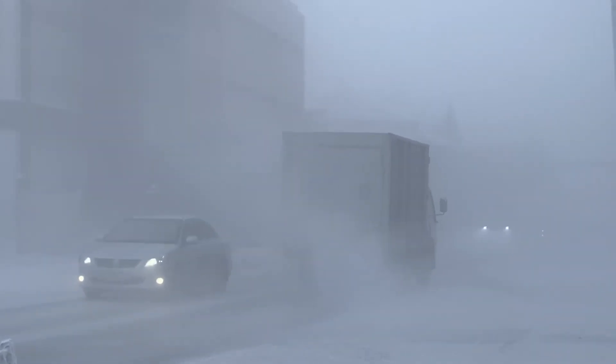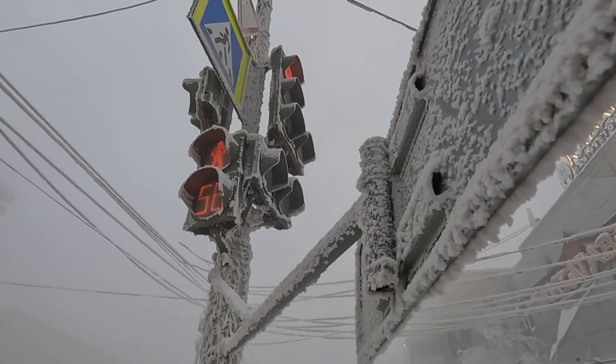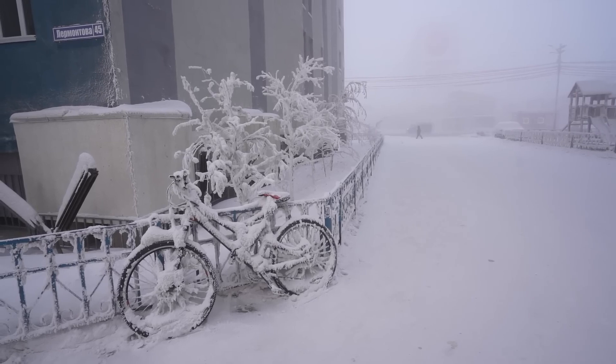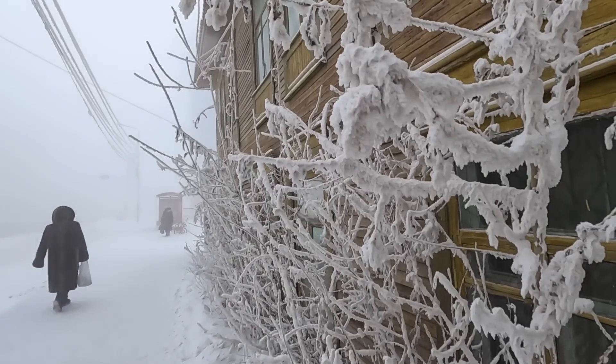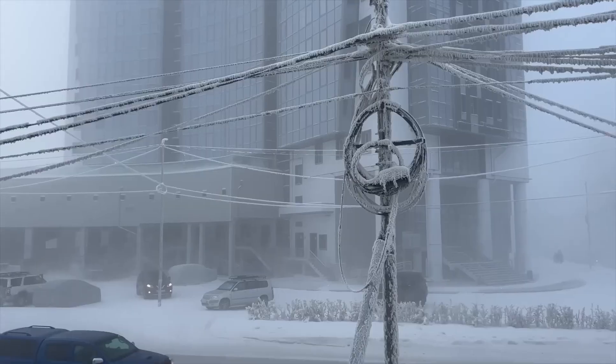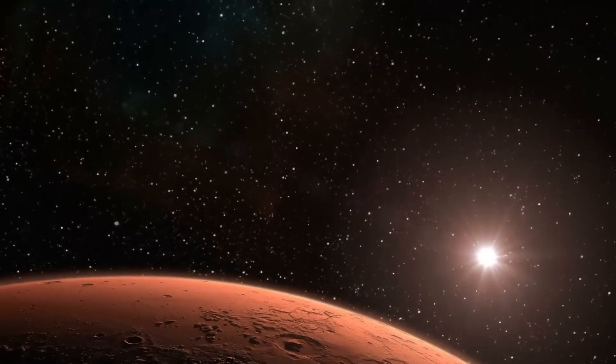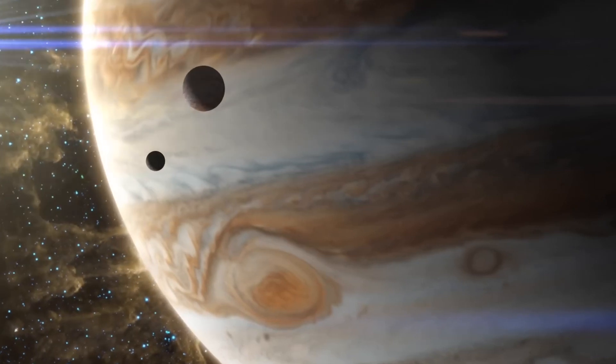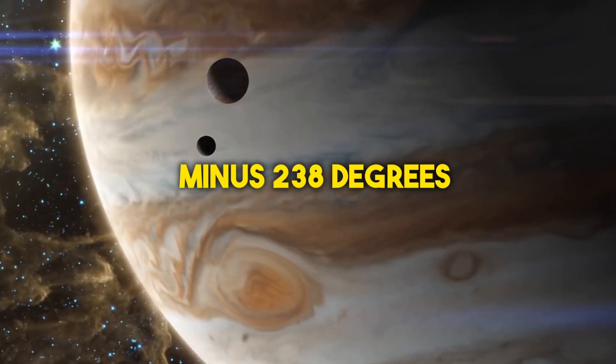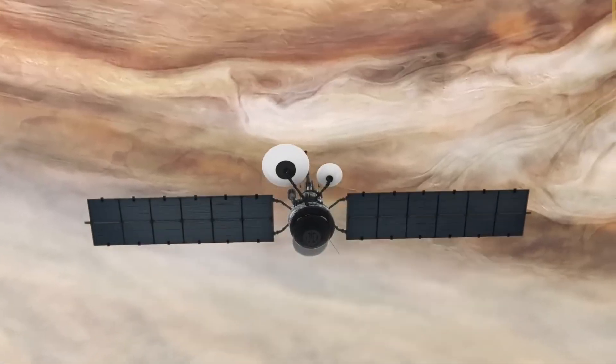Conversely, the coldest spot on Earth at minus 128.6 degrees Fahrenheit feels positively balmy compared to the frigid realms of our solar system and beyond. Mars, with its bone-chilling lows of minus 220 degrees, and Jupiter, averaging a mind-numbing minus 238 degrees, are just the beginning.